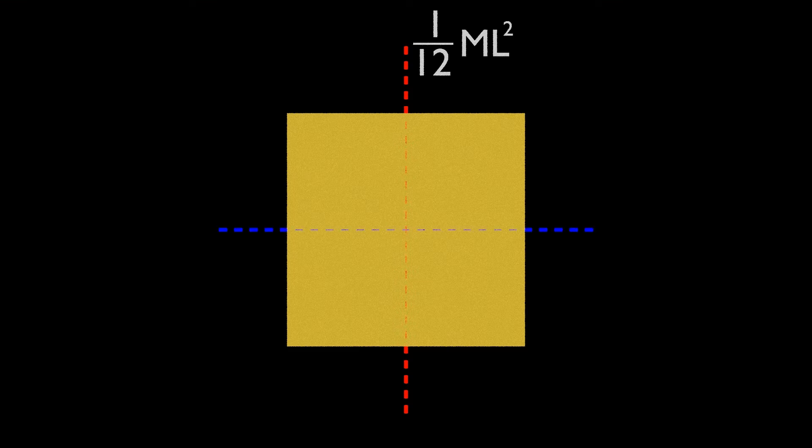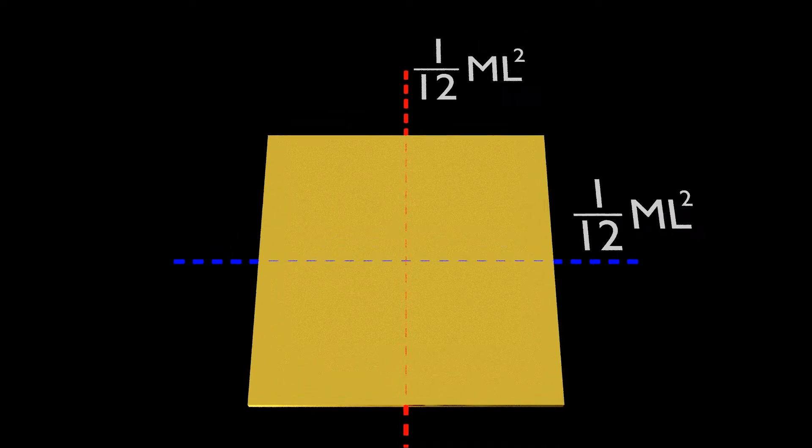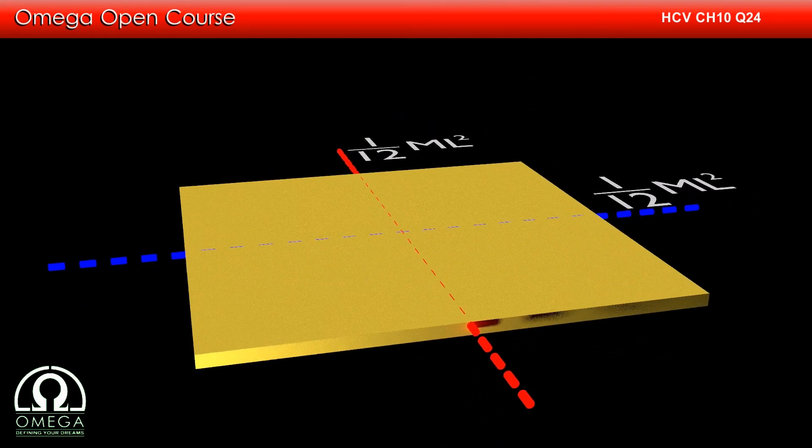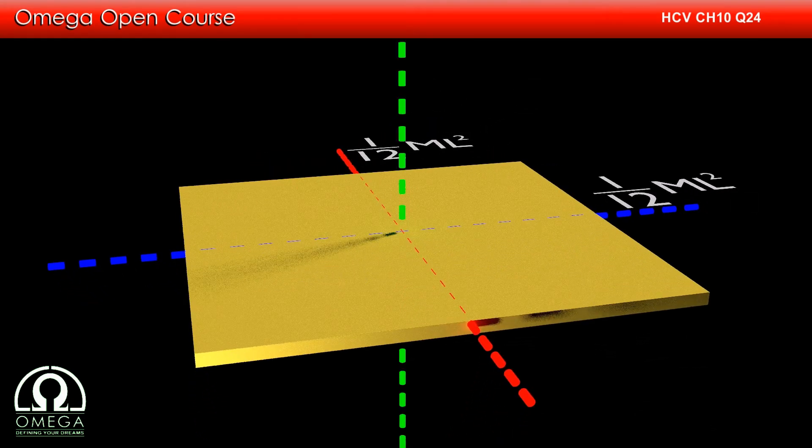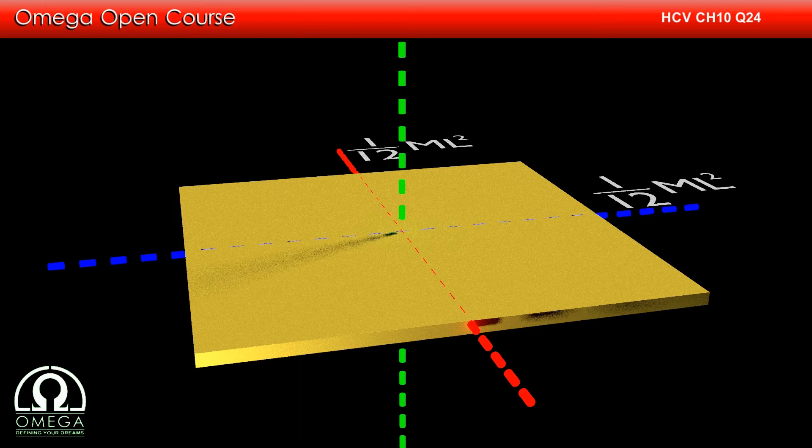The moment of inertia about another axis perpendicular to this axis will also be the same. Now, as per the perpendicular axis theorem, the moment of inertia about an axis perpendicular to both these axes is equal to the sum of moment of inertia about those axes.